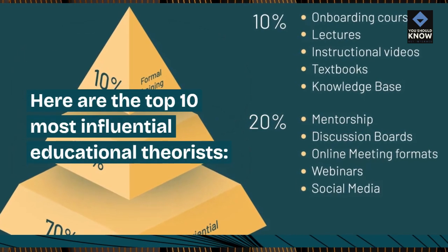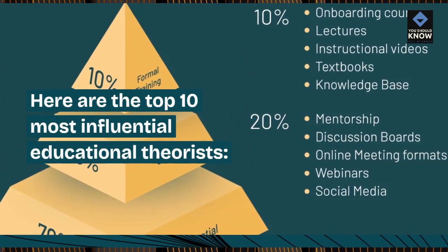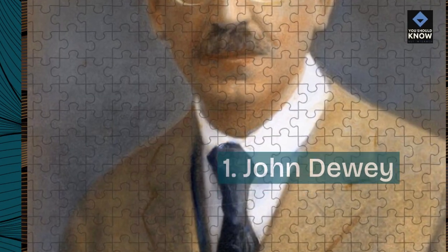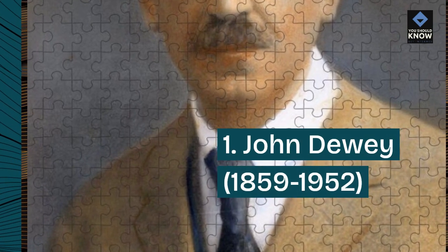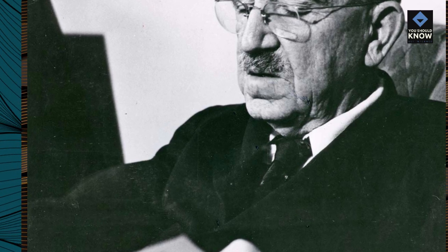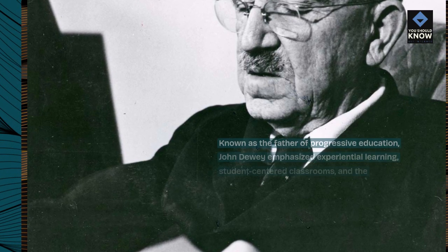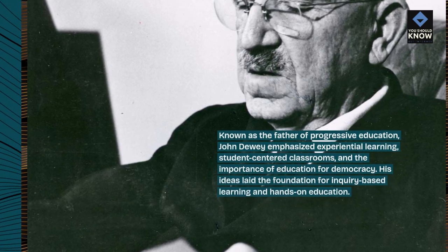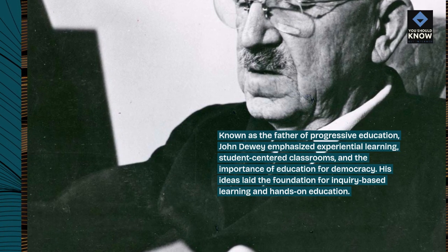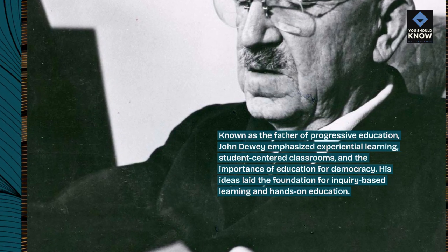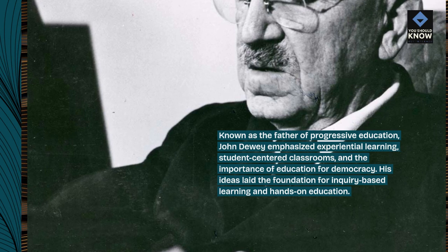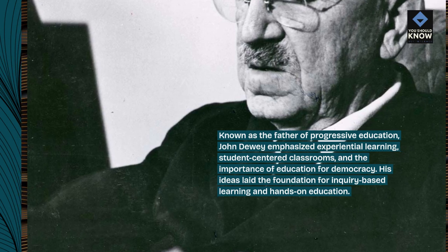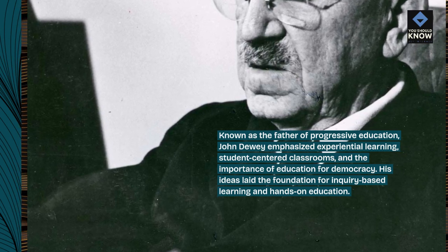Here are the top 10 most influential educational theorists. 1. John Dewey, 1859–1952. Known as the father of progressive education, John Dewey emphasized experiential learning, student-centered classrooms, and the importance of education for democracy. His ideas laid the foundation for inquiry-based learning and hands-on education.